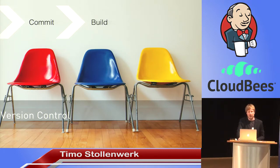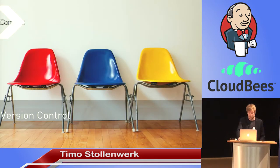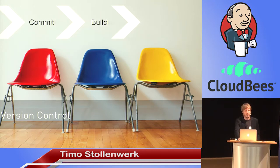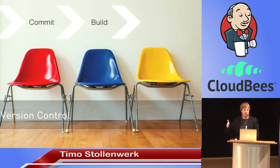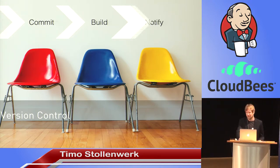Beyond triggering builds, you also have to notify people, and to do that you need to preserve the commit message. If you have a build pipeline with multiple jobs running in parallel, you still want to preserve the commit message. If your build fails at the end of the pipeline, you still want to know who did it. So version control is not as straightforward as it seems.